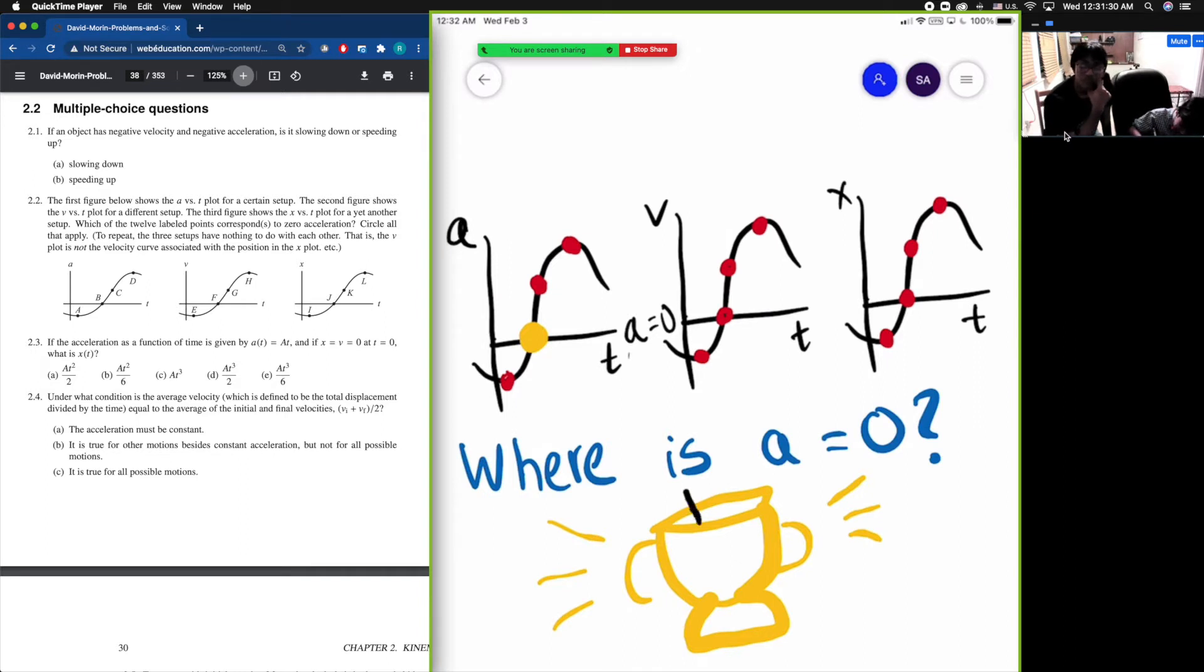So that means one of the letters in the victory cup is B. Cool, cool. Can I move that so we can fit the other positive letters? Yeah, so he already got the location of the zero acceleration in the A vs T graph.